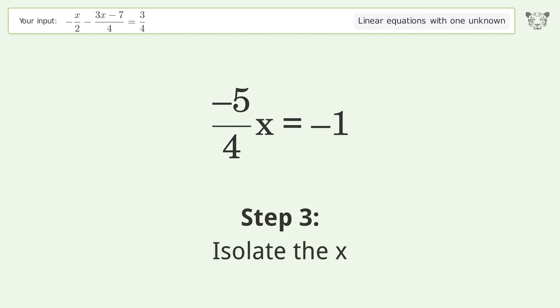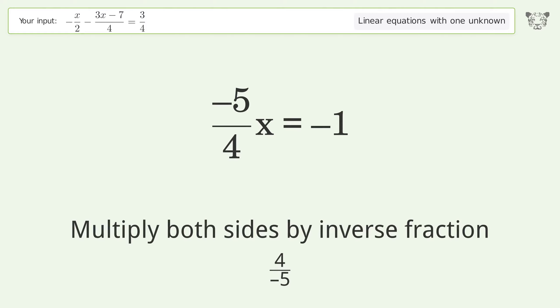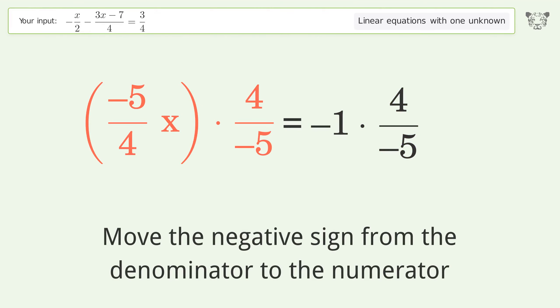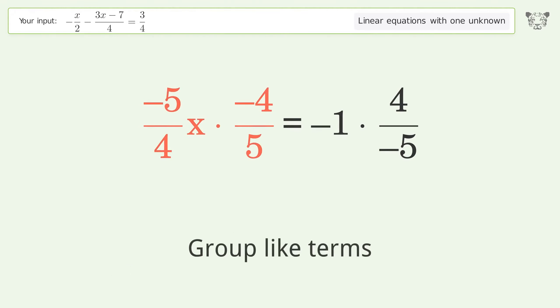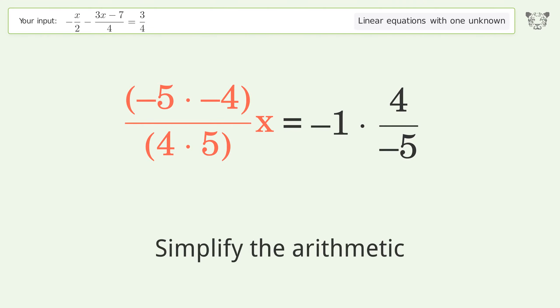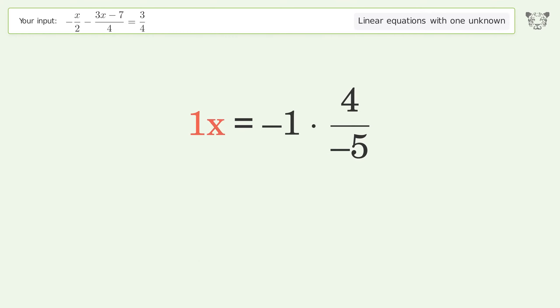Isolate the x. Multiply both sides by the inverse fraction 4 over negative 5. Move the negative sign from the denominator to the numerator. Group like terms. Multiply the coefficients. Simplify the arithmetic. Cancel out the negatives.